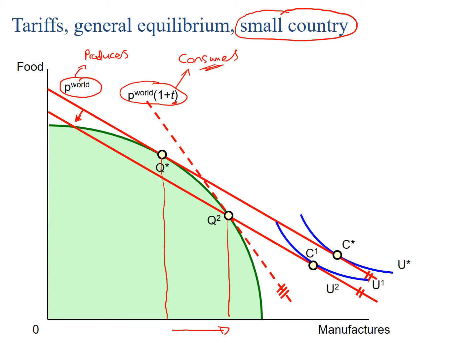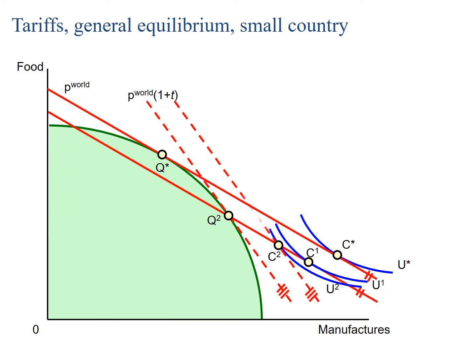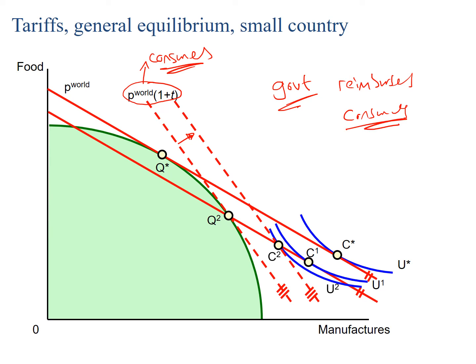This utility curve shifts down to reflect the reduction in income level. We also see the consumer's relative price or income level increasing, and the reason for this is that we assume the government reimburses the consumer for this loss. So therefore we get to the point where the income level for the consumer crosses the income level of the producer and we get this new utility curve.